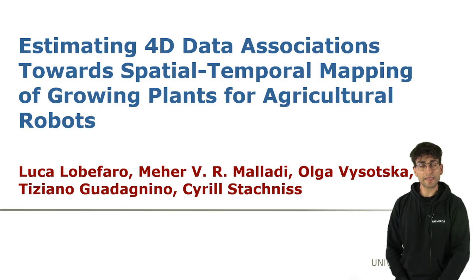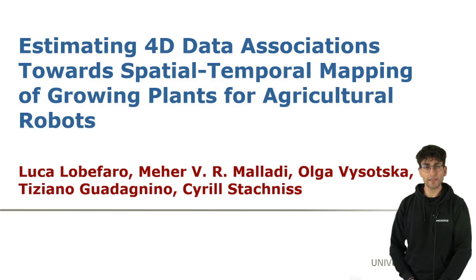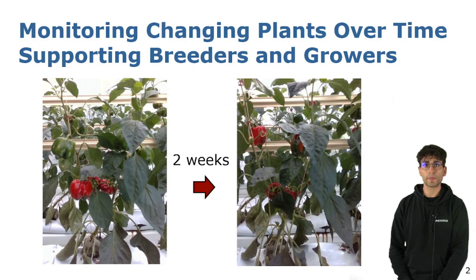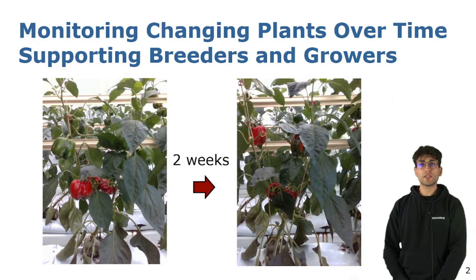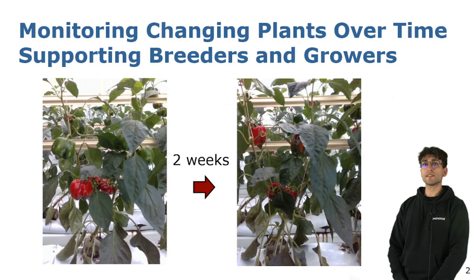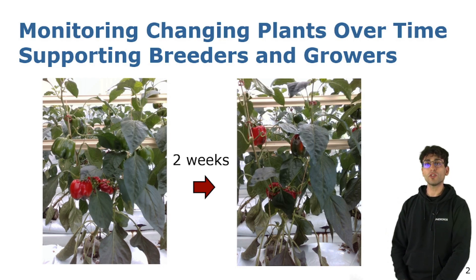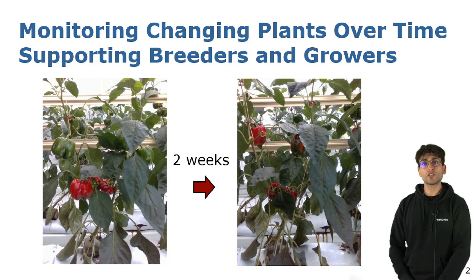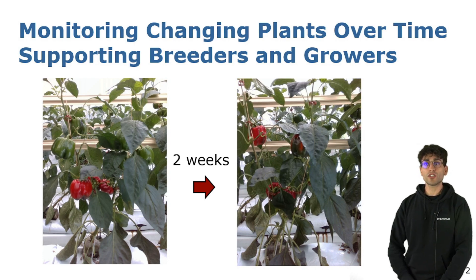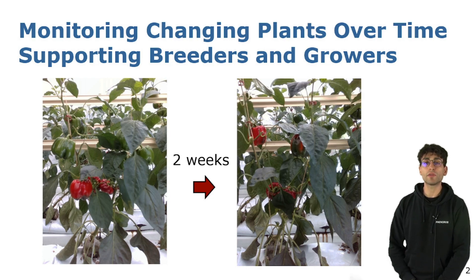Hi, I am Luca and I am here to present my paper: estimating data associations toward spatial-temporal mapping of growing plants for agricultural robots. Whenever intelligent systems should model or understand how the world evolves, monitoring change in geometries over time becomes relevant, as our world is not static. This is especially true for robots operating in agricultural environments, where the goal is to monitor plant changes over time, a central problem for phenotyping and breeding decisions.